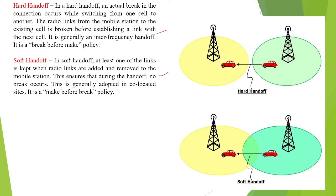Soft handoff — you can see this. This is the coverage area for the first cell site and this is the coverage area for the second cell site. So here there is no problem. When the user is moving from the present cell site to the next cell site, this is cell site one and this is cell site two.